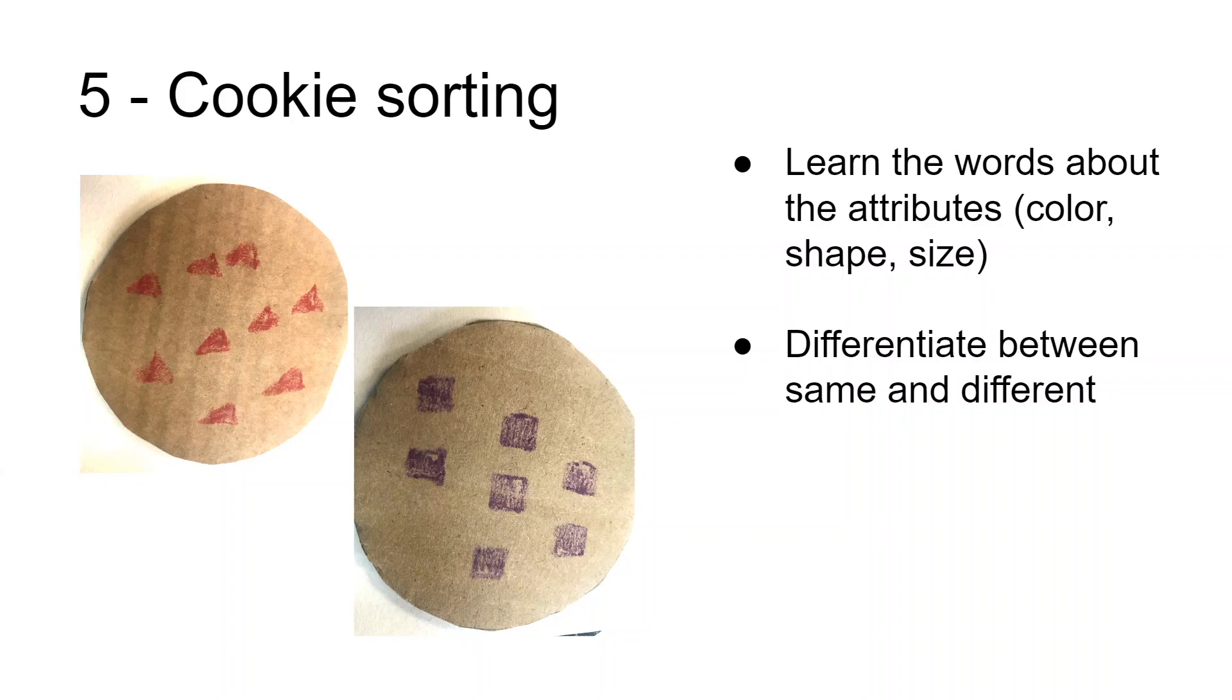Basically, each cookie has a different number of objects, and each one of those objects has different colors on it. You can see on the left we have a cookie that has nine red triangles, and on the right we have a cookie that has seven purple squares. This activity really consists of having the child classify by one thing: either the number, the color, or the shape.